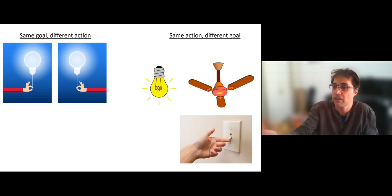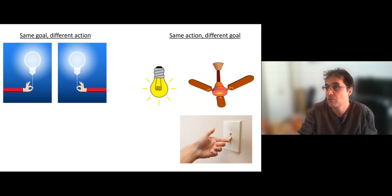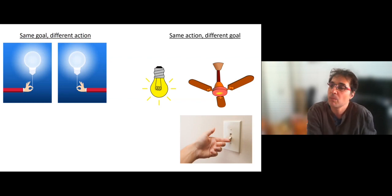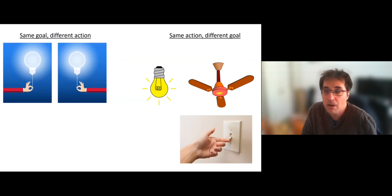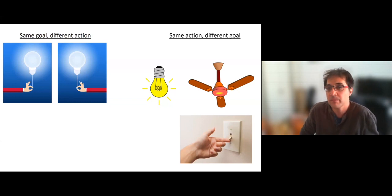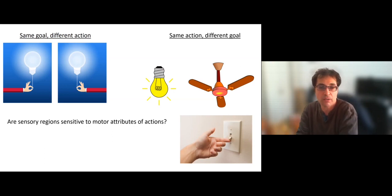For example, I can flick the switch and it can be either to turn on the light or to turn on the fan. The motor scheme is exactly the same, the motor commands are the same, but the desired consequence and the actual consequence in the world are completely different. So a major question in neuroscience is how the brain links actions to their sensory consequences. Today I'll describe work from the lab, focusing on two questions.